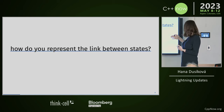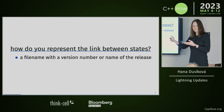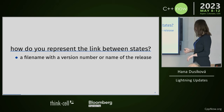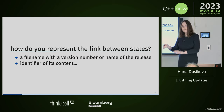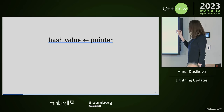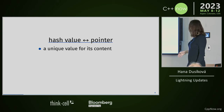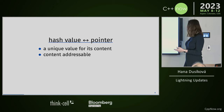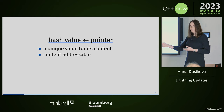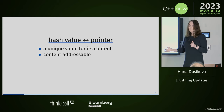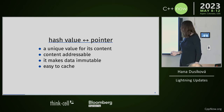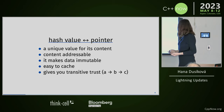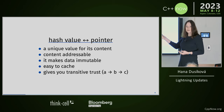You can represent links between states as a filename like 'a2b.bin', or as content-addressed identifiers: hash the content and name the file by its hash. A hash value is like a pointer — it's a unique value for its content, it will never change, and you can use it for addressing content. It's also easy to cache because it never changes, and it gives you transitive trust: if A points to B, you can also trust C.